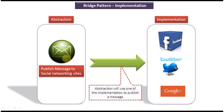On the left side you can see the abstraction layer. Suppose I want to publish some message to the public — I can use any one of the social networking sites shown on the right side: Facebook, Twitter, or Google Plus. So the abstraction is using one of these implementations to publish the message. If later I want to add a new implementation in the implementation layer, I can do that without affecting the abstraction layer. This is the best example of the bridge design pattern.